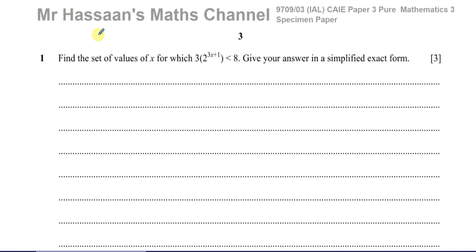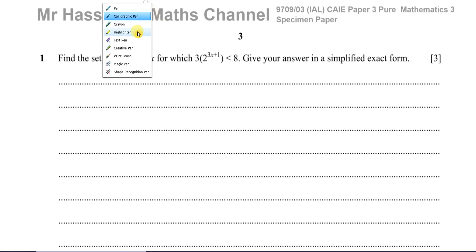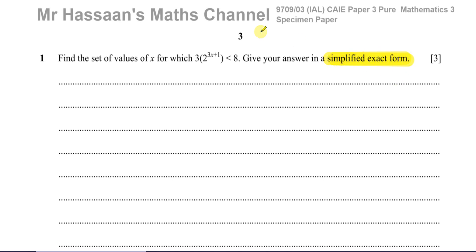So question number one. We have to find the set of values of X for which the inequality 3 times (2 to the power of 3x plus 1) is less than 8. Give your answer in a simplified exact form, which means we're not asked to give a decimal answer — we have to give an answer in terms of logarithms, because this is an exponential equation.